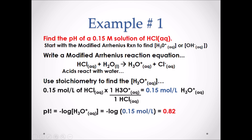We then put that into our pH calculation: pH equals the negative log of the concentration of H₃O⁺. That gives us a pH value of 0.82. Note there were only two significant digits in our starting value, therefore we should have two significant digits to the right of the decimal.